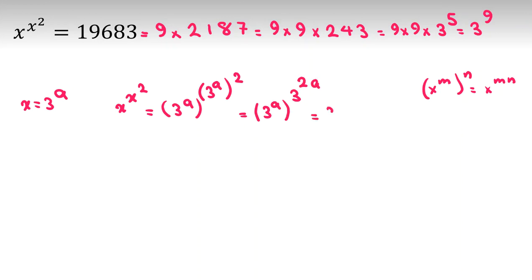Applying the rule again, this becomes 3 to the power of a times 3 to the 2a.